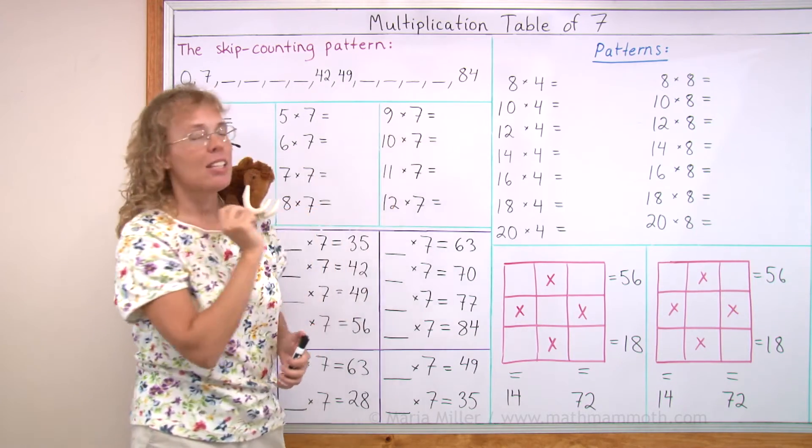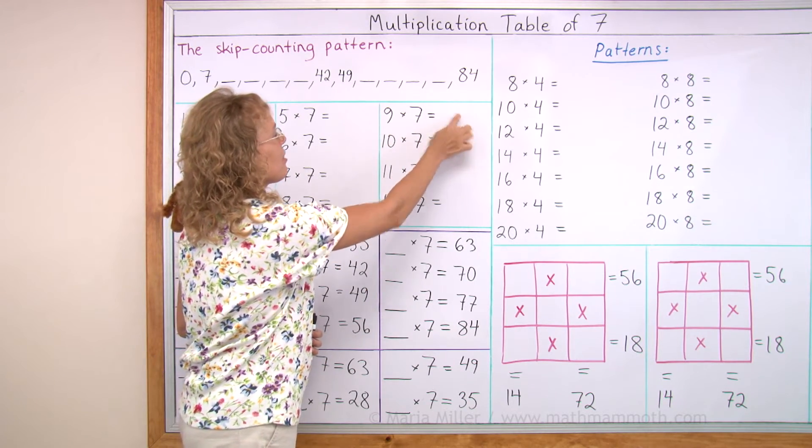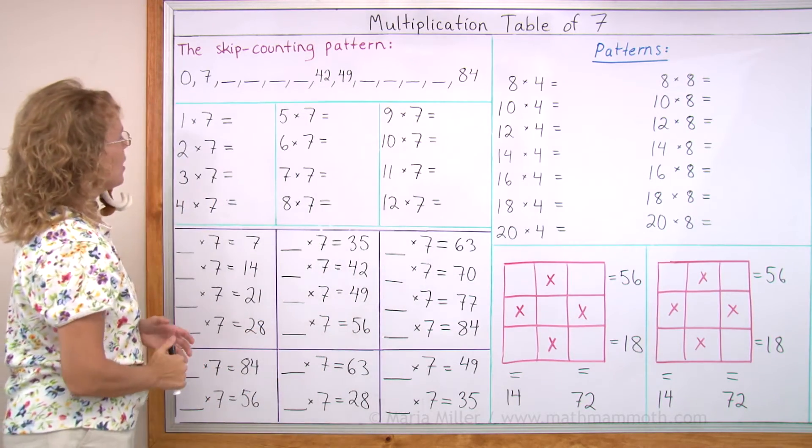9 times 7, it's in the table of 9. You remember? It's less than 70. It's in the 60s. 63. And then 70 is easy. 77 is easy. This is 84. All right.